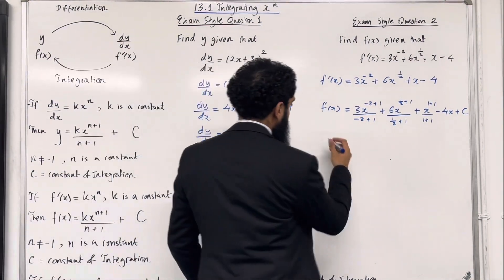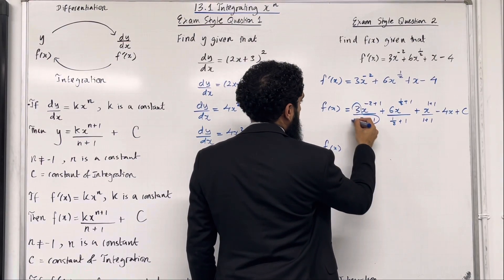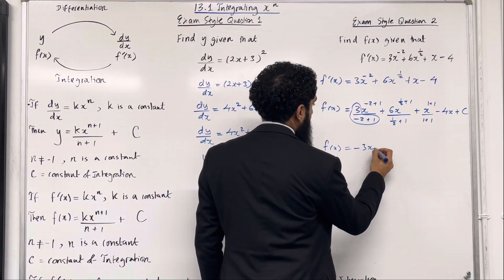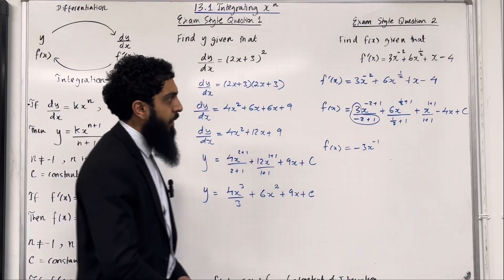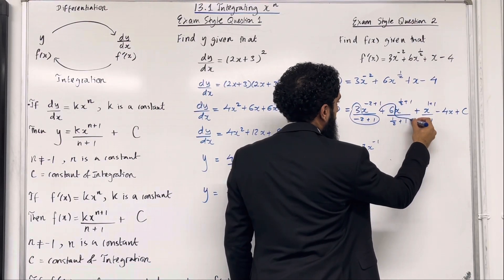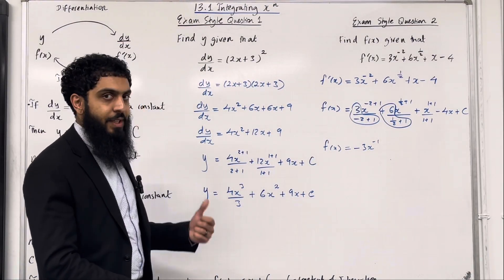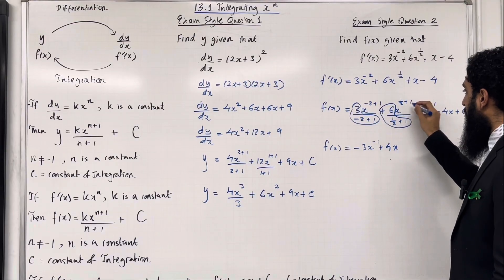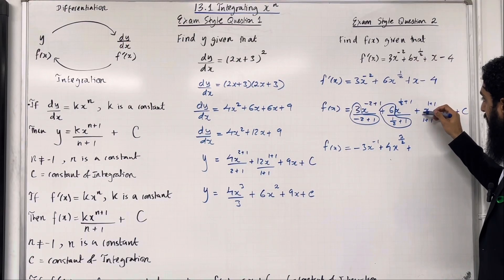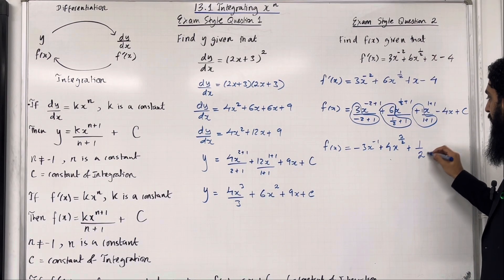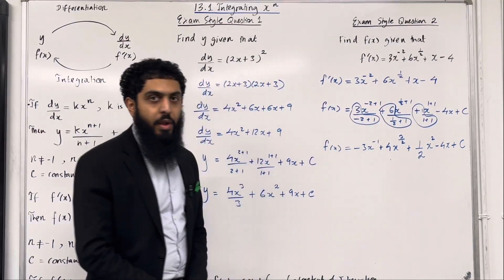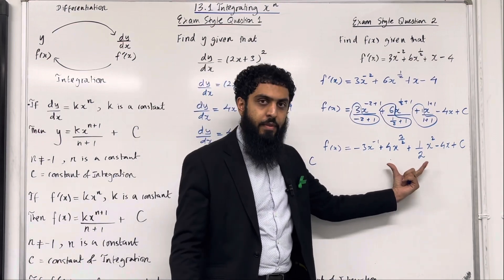Now let's simplify. For the first term: −2 + 1 = −1, and 3 divided by −1 = −3, giving −3x^(−1). For the second term: 1/2 + 1 = 3/2, and 6 divided by 3/2 = 4, giving 4x^(3/2). For the third term: the coefficient of x is 1, divided by (1+1) = 1/2, giving (1/2)x². Minus 4x plus c, the constant of integration. So if f'(x) equals that polynomial, f(x) = −3x^(−1) + 4x^(3/2) + (1/2)x² − 4x + c.